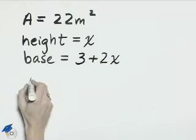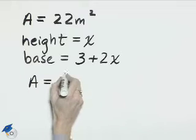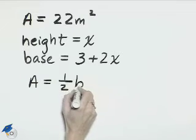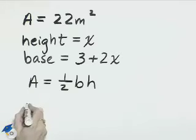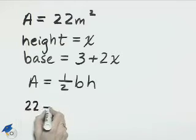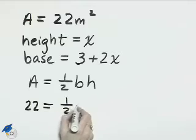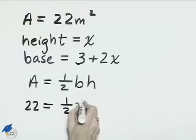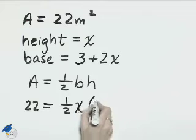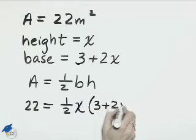The formula for area of a triangle is area equals one-half base times height. We can substitute 22 for A, one-half times the base of 3 plus 2x, times the height of x. So we'll have x times the quantity 3 plus 2x.